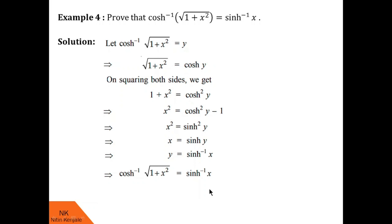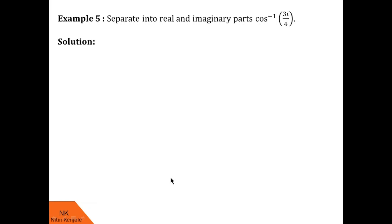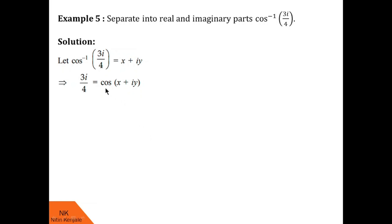Now let us go ahead with the next and last example. Here we are asked to separate into real and imaginary parts of cos⁻¹(3i/4). We first let cos⁻¹(3i/4) = x + iy, so x is the real part and y is the imaginary part. Taking cos on the other side, we get 3i/4 = cos(x + iy). Now let us expand cos(x + iy): it equals cos(x)·cosh(y) − i·sin(x)·sinh(y), using the relation between circular and hyperbolic functions.